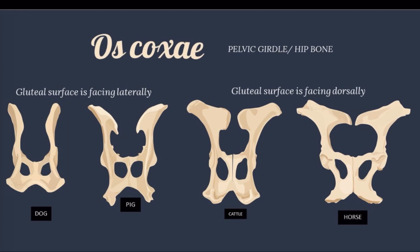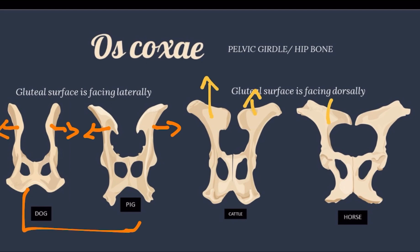We can identify them by size and shape. In the dog, cat, and pig, the gluteal surface is facing laterally. In the dog, the wing of ilium is distinctly concave and has more than one gluteal line. In the pig, the wing of ilium is divided into two fossae by a distinct gluteal line.